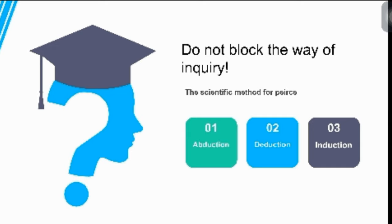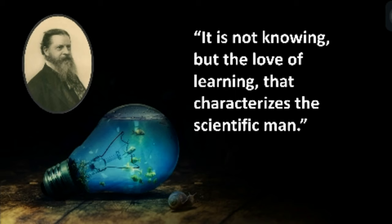What does the scientific method mean for Peirce? It is not necessarily different from the standard scientific method, as it is also derived from him. It involves three phases: first, abduction — making conjectures or creating a hypothesis; second, deduction — inferring what should be the case if the hypothesis is true; and third, induction — the testing of the hypothesis. Simple, yet still very important today, as seen for example in finding the right vaccine to cure COVID-19 patients. Peirce believed that the great ocean of truth is infinite and always waiting to be discovered, and he quoted: 'It is not knowing but the love of learning that characterizes the scientific method.'